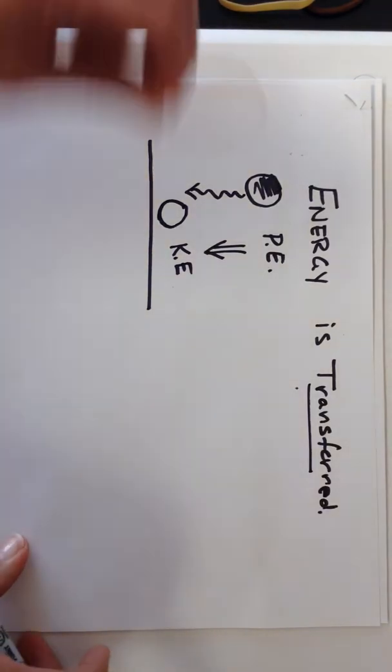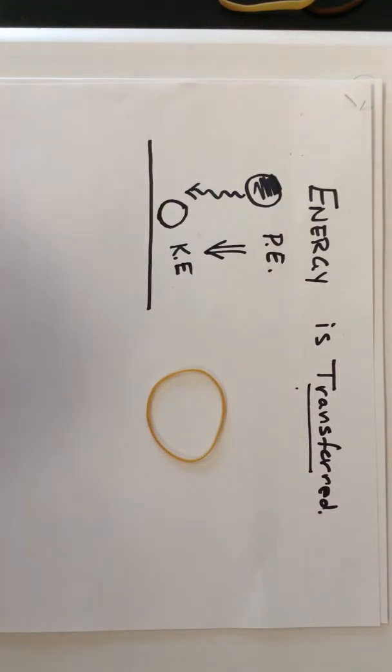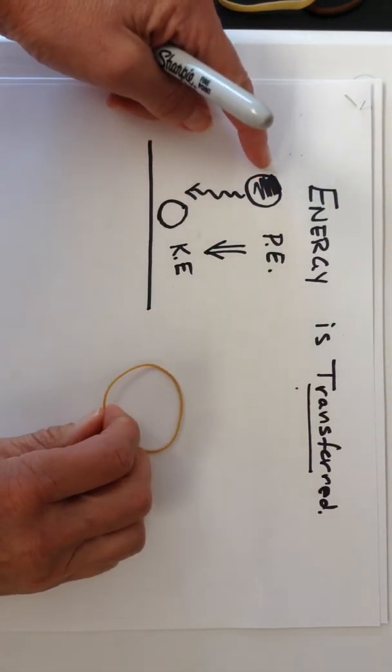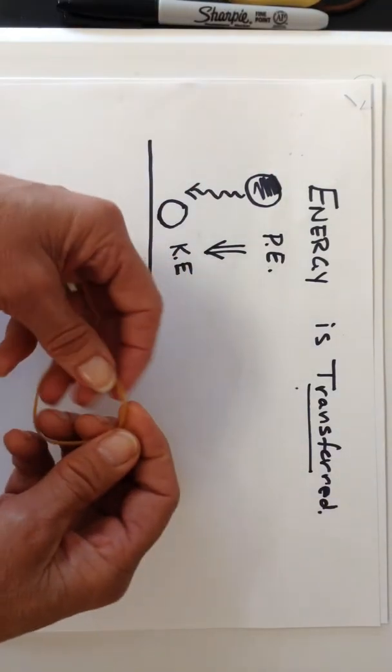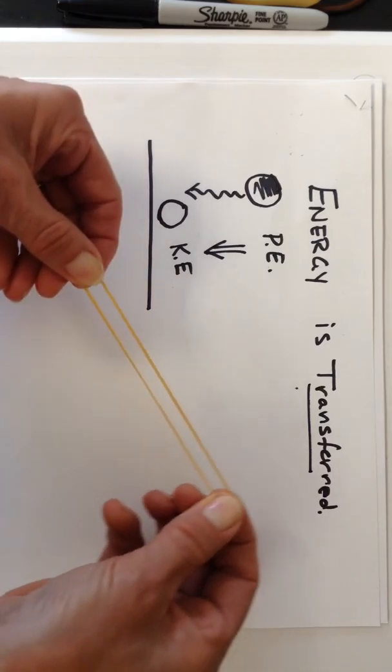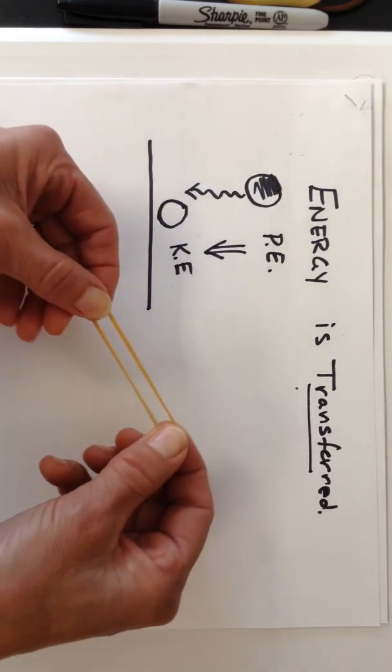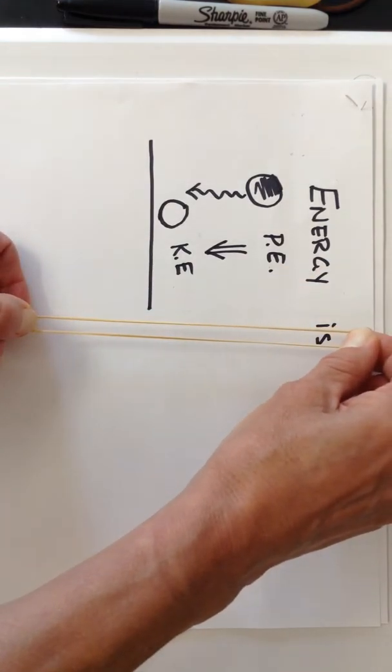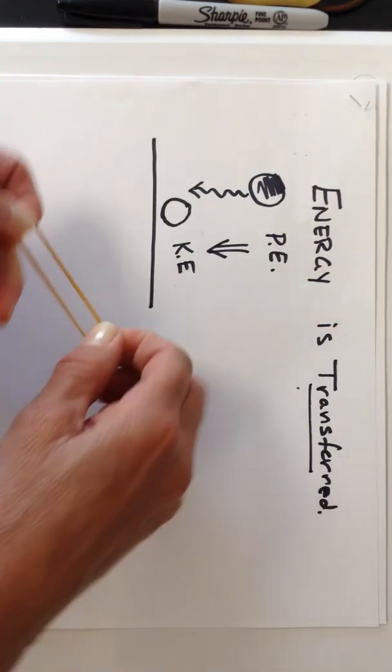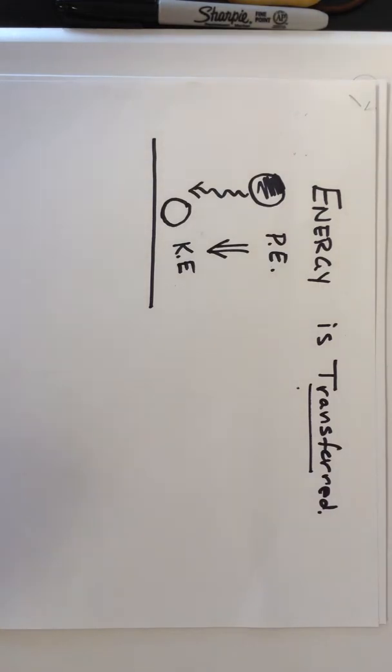We're going to use the same idea with the rubber band. So instead of this potential energy, which more specifically is called gravitational potential energy, these rubber bands have what we call elastic potential energy. So as I stretch and stretch them, it's like lifting the ball up higher and higher and when I let it go, it's going to snap back and transfer that energy.